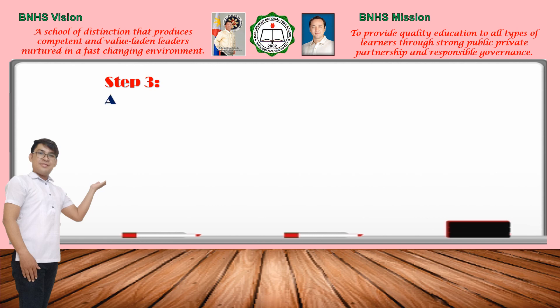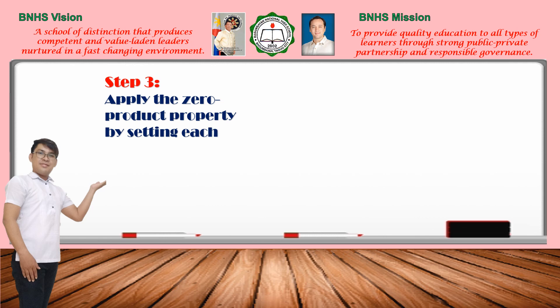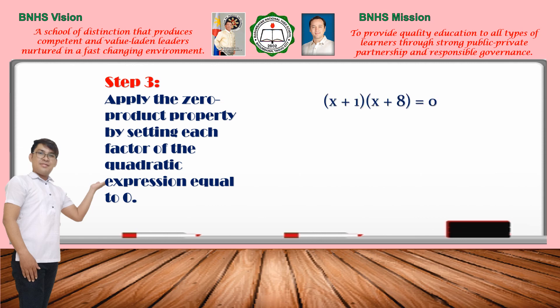Step number three: apply the zero product property by setting each factor of the quadratic expression equal to 0. What we have now is a product that equals 0. This allows us to use the zero product property, which says that any time a product equals 0, at least one of the things we are multiplying must be 0. This allows us to split the equation and say that either x plus 1 or x plus 8 is equal to 0.